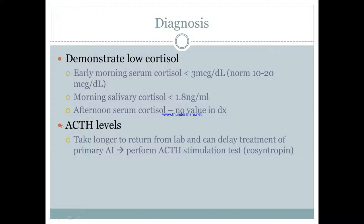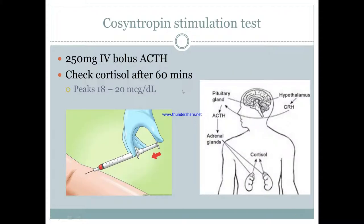Once you've done that, check serum ACTH levels because this will tell you if it's primary or secondary. However, in an acute setting, ACTH takes a while to come back from the lab, and sometimes you can't wait that long. So you can do the cosyntropin stimulation test: give a 250 mcg IV bolus of ACTH, then after an hour check if cortisol peaks to 18 to 20. If it peaks, that means ACTH can act on your adrenals and you don't have primary — you have secondary insufficiency.